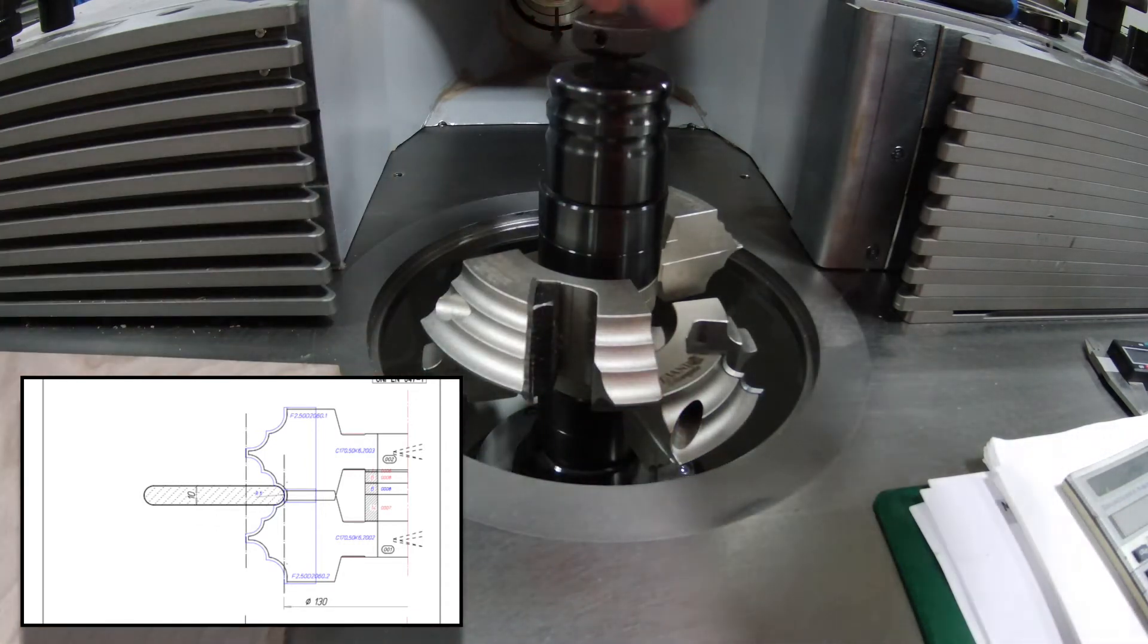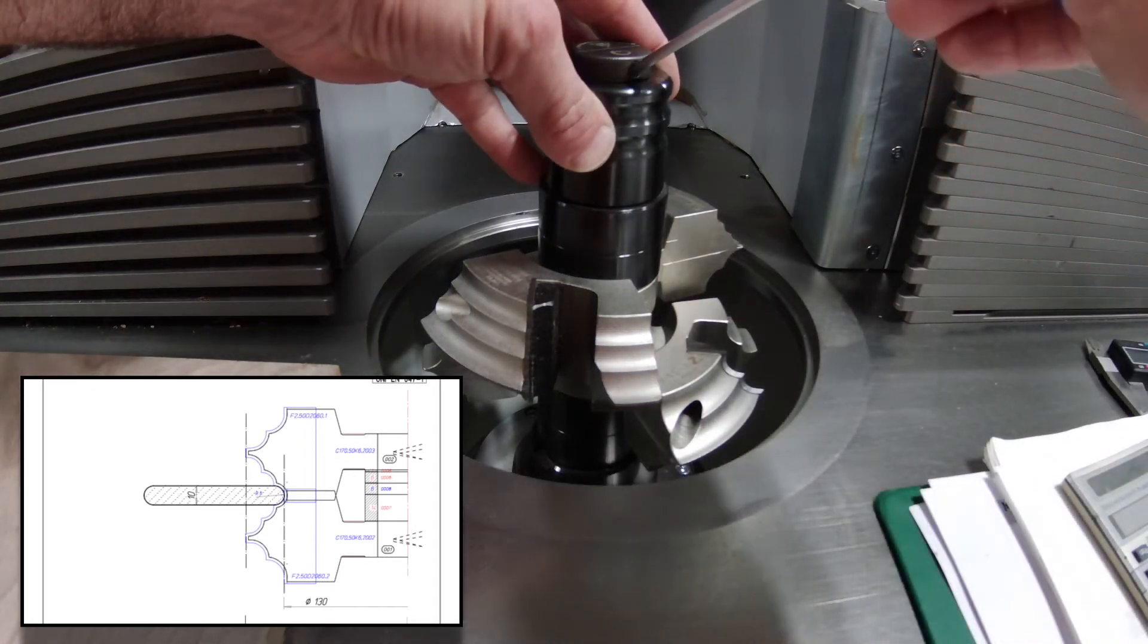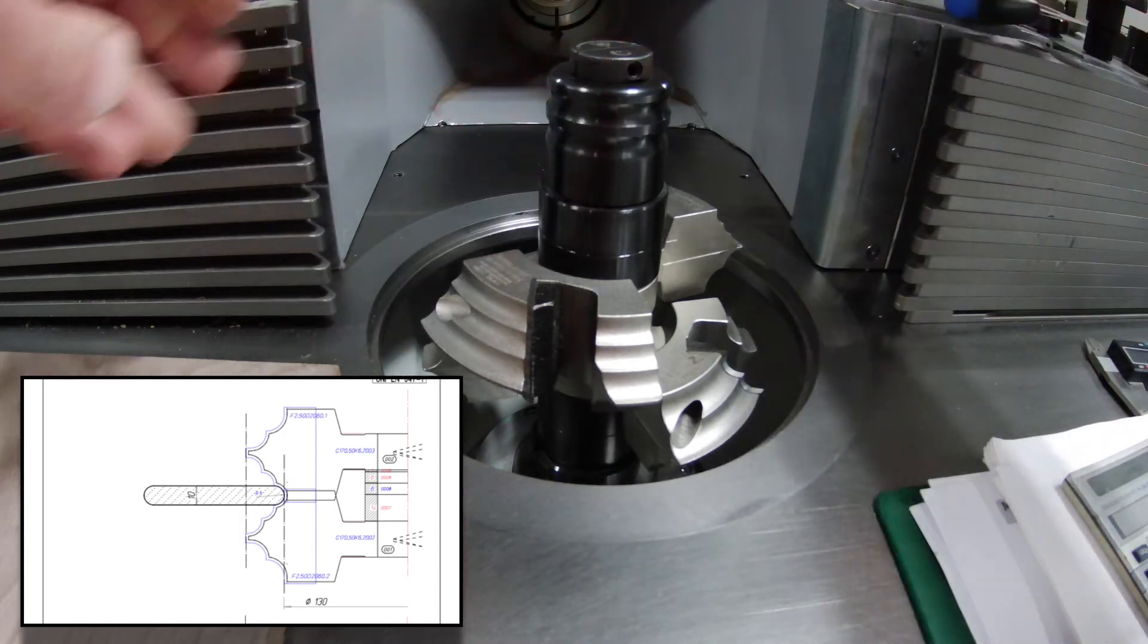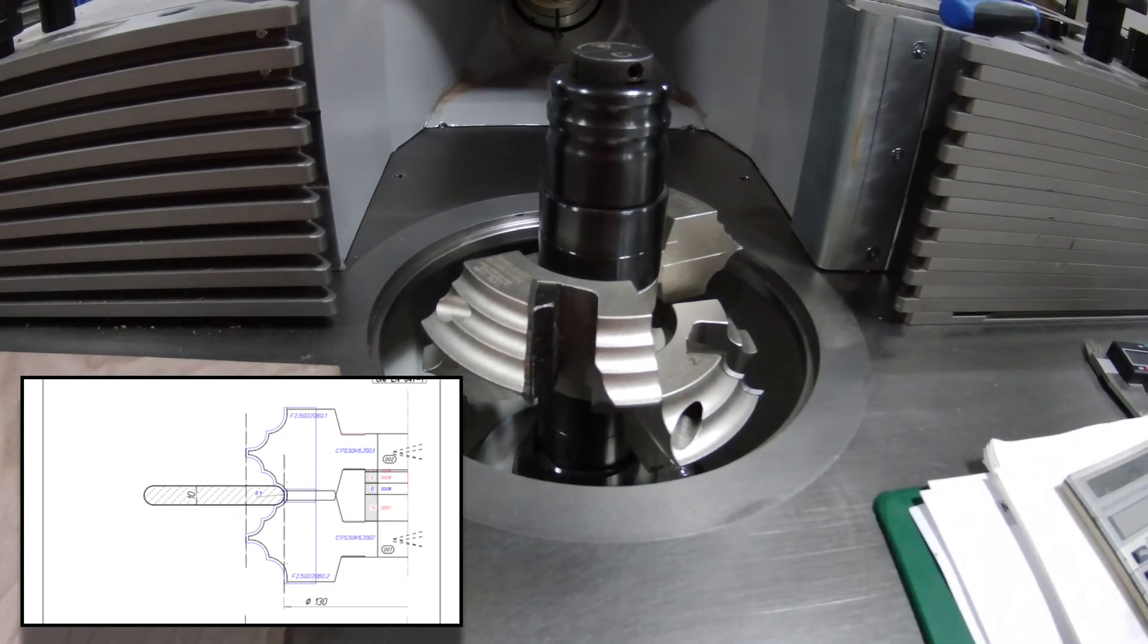So in summary, for the 10 millimeter bullnose, we have the first cutter, which is 19 millimeters high, 27 millimeters of spacers, and then the top cutter, also 19 millimeters high. Those are the dimensions that we need to program the shaper.